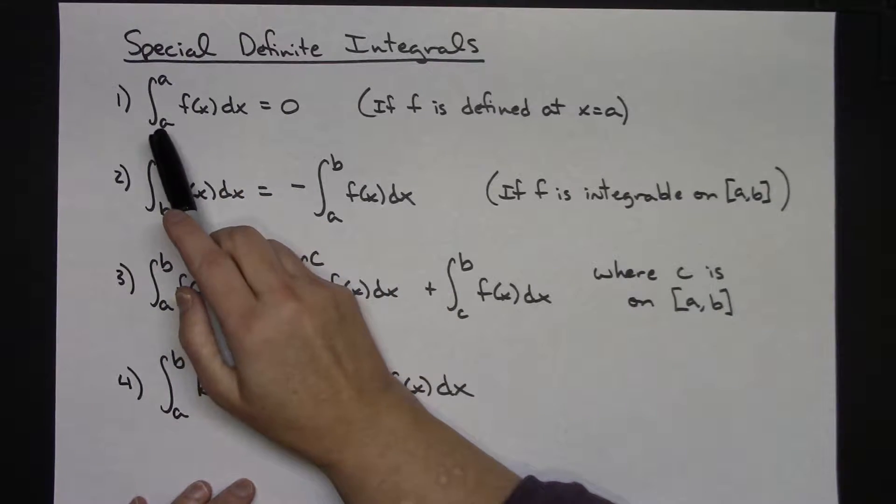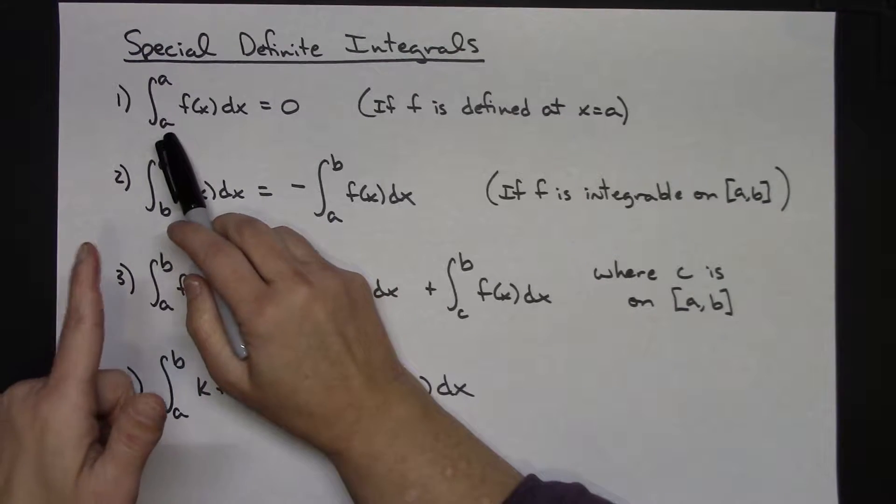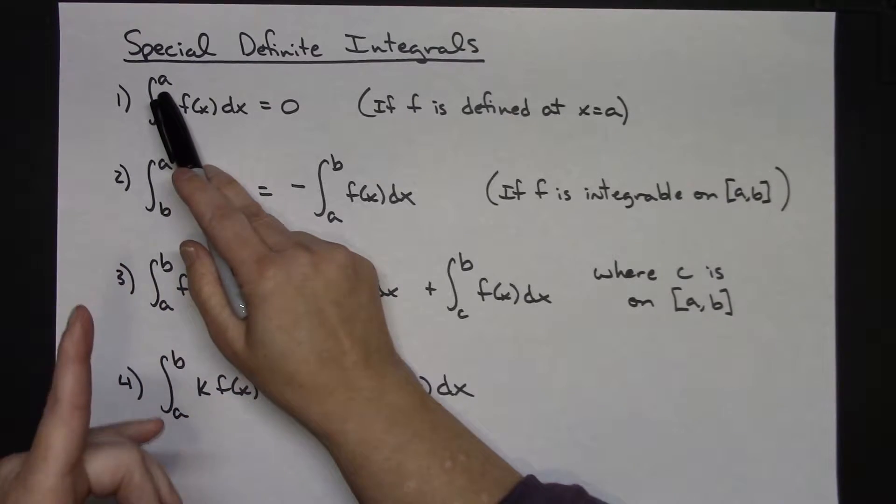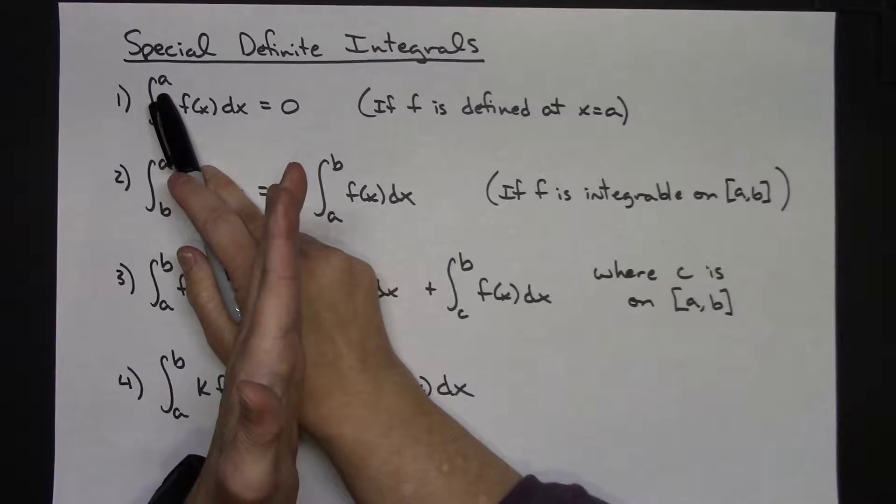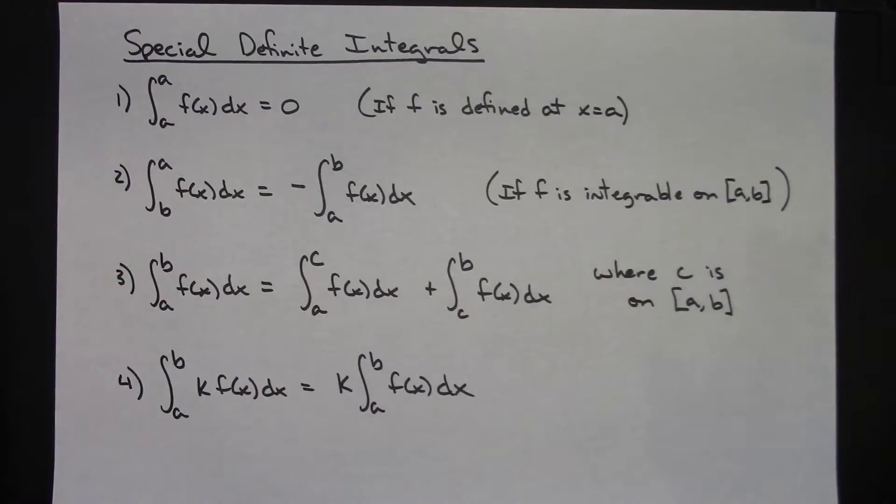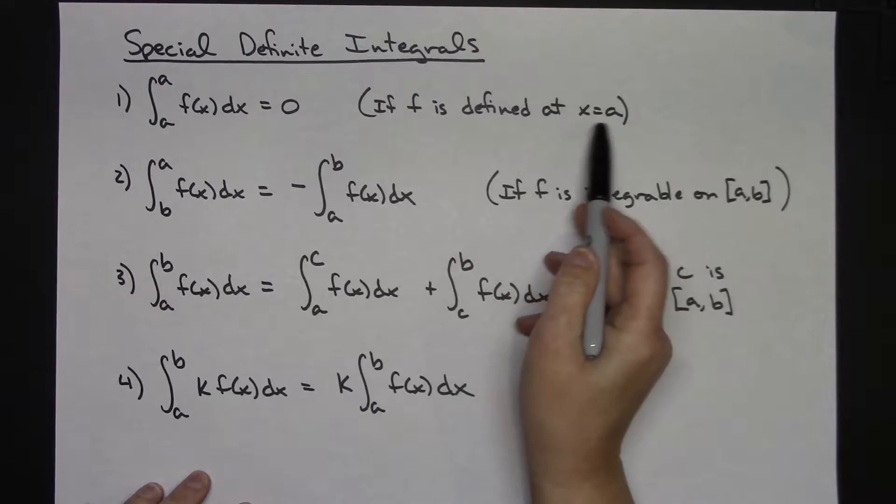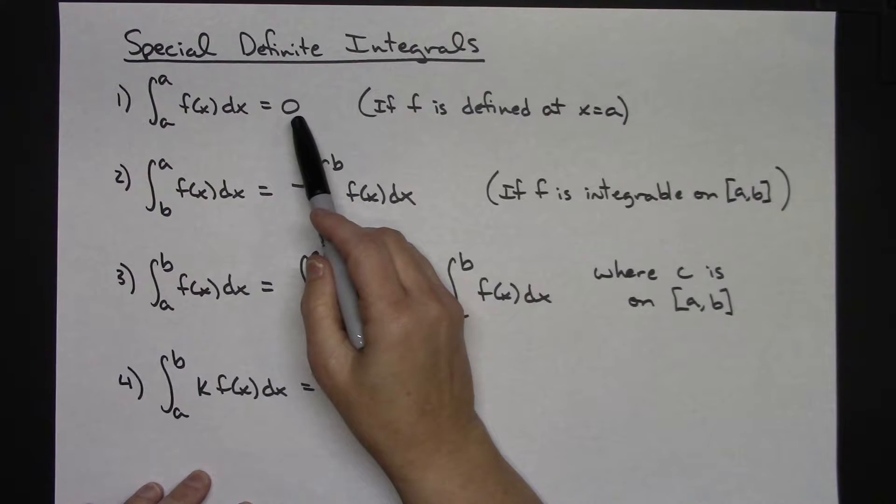This first one - if I integrate from a to a of f of x dx, hopefully you're thinking okay I've got a vertical line at x equals a, I've got another vertical line at x equals a, so then the area would be zero because there would be nothing. My interval would not be very wide over there. You are assuming here that f is defined at x equals a of course, but you just wouldn't have any area there.